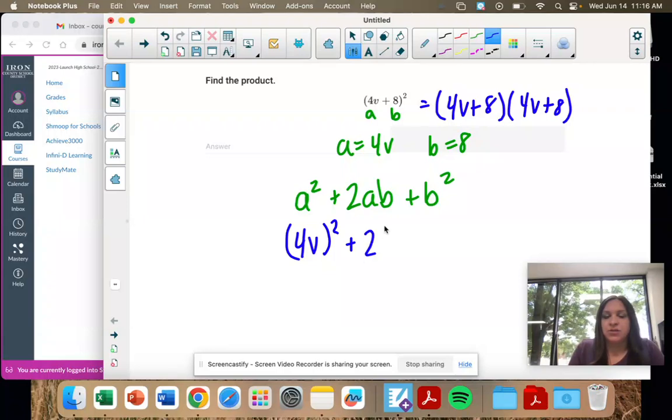And then you take 2 times A, which is 4V, times B, which is 8, and then B squared, so 8 squared.